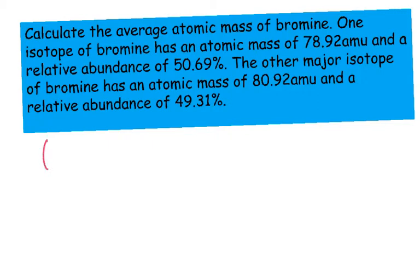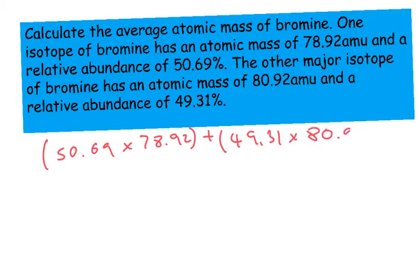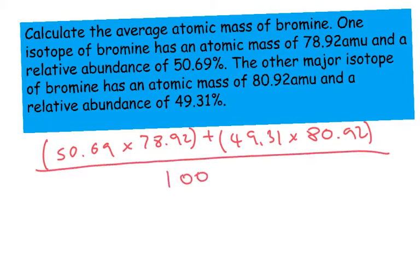So 50.69% times by 78.92 plus the other isotope had an abundance of 49.31%, and times that by 80.92, and we're going to divide that all by 100. And we get a final answer of 79.91 atomic mass units.